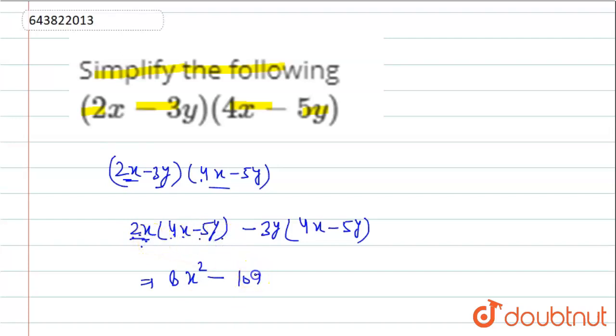x into y is xy minus. Now we multiply minus 3 into 4. This will be 12y into x, xy.